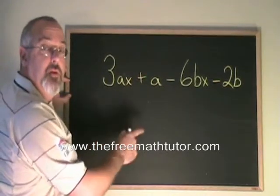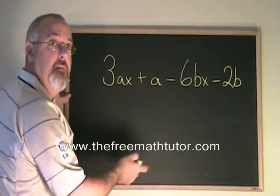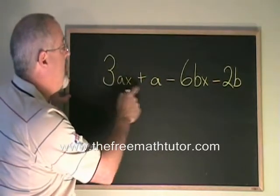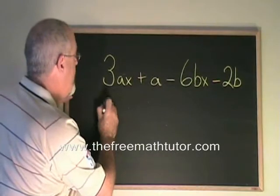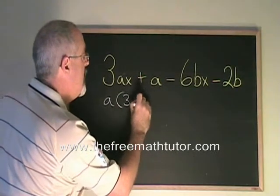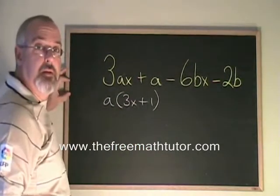And if each group of two has a common factor, we might be able to do the grouping technique. If I look at the first two terms here, they have a common factor of a. So I can factor out an a, and I end up with 3x plus 1.